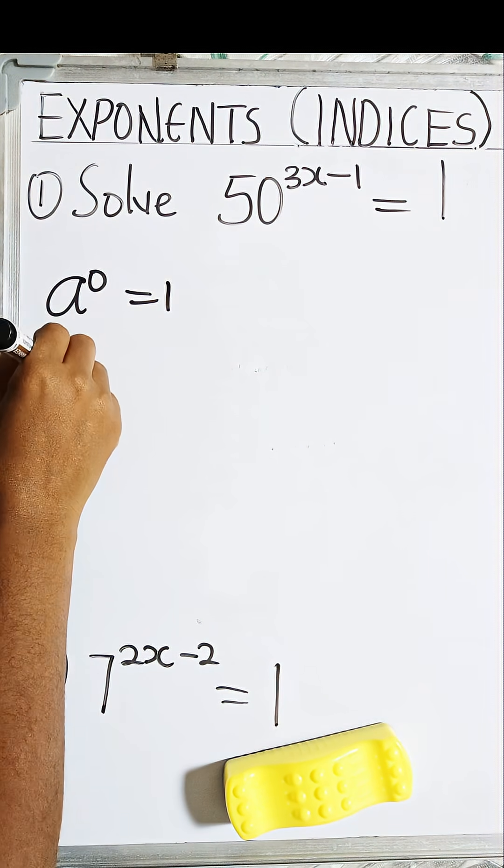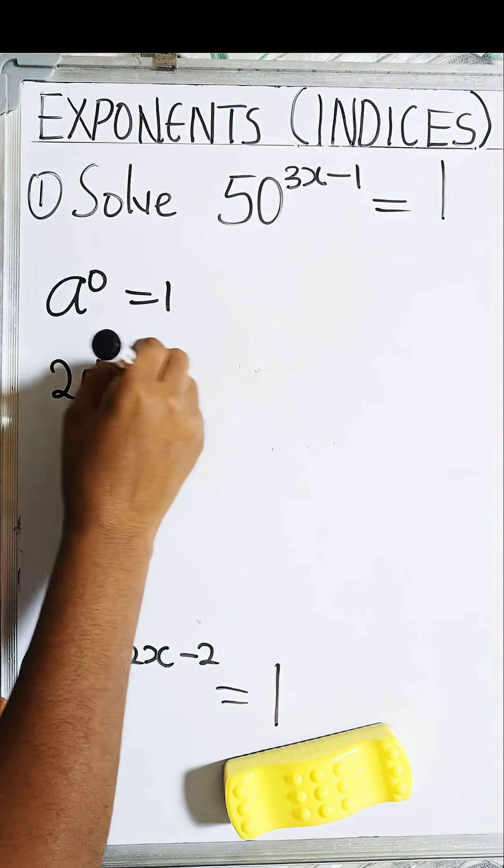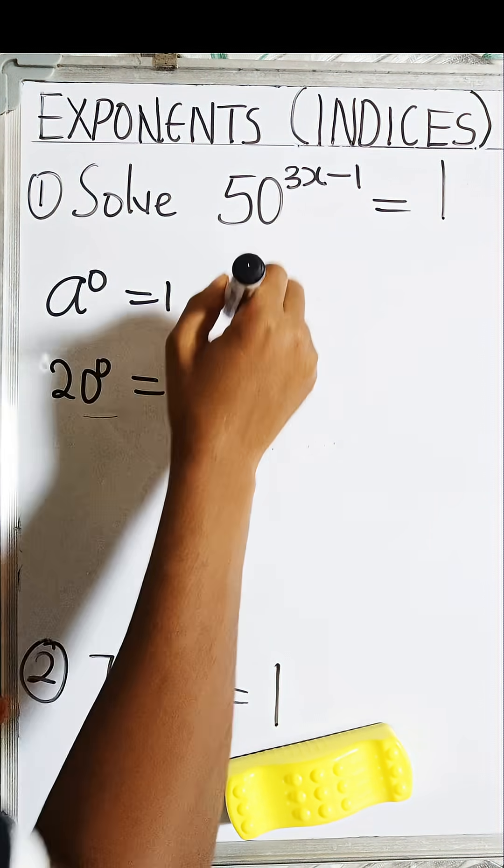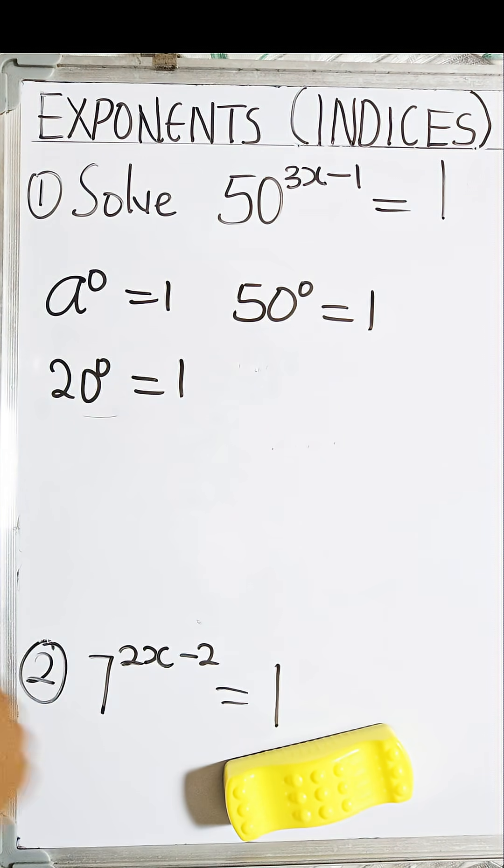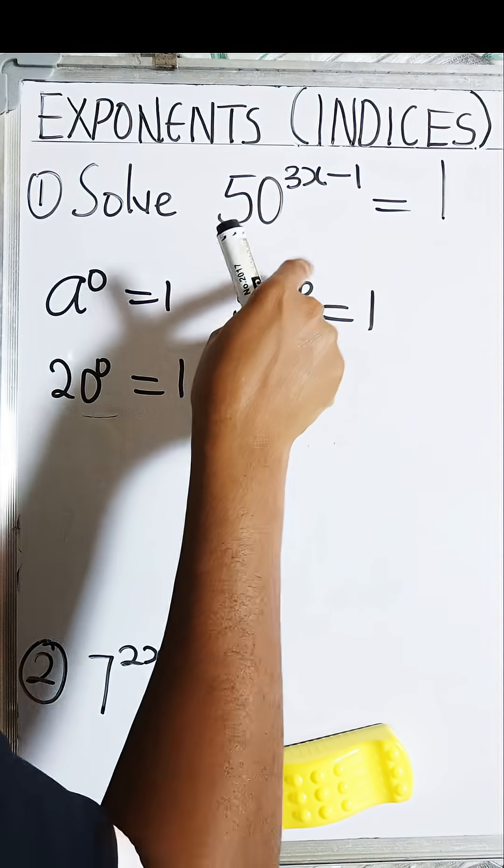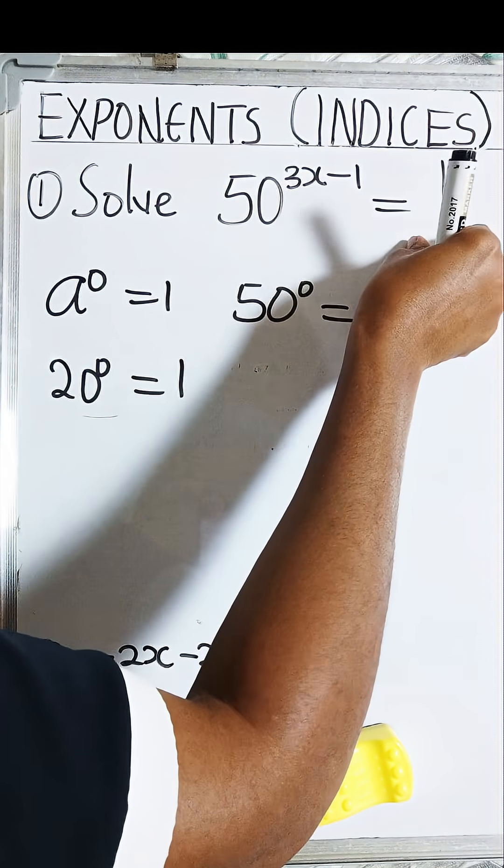That's to say, if you have 20^0, your answer is 1. So if we have 50^0, our answer will be 1. So that means we can actually replace 50^0 in place of this 1.